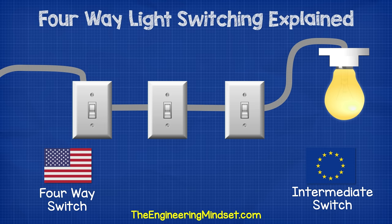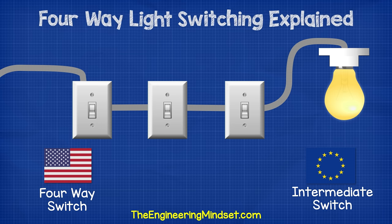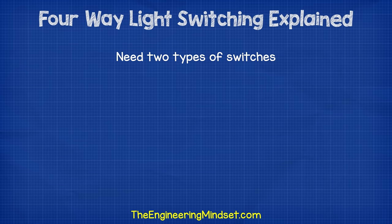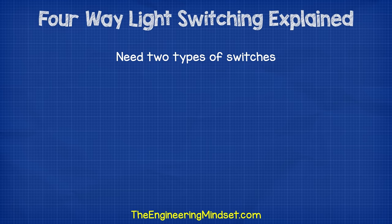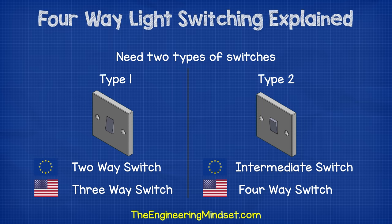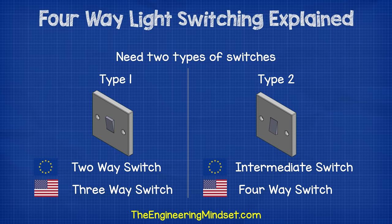This system is called by a different name depending on where in the world you live. In North America, this is called a four-way switch circuit, and in the EU and other parts of the world, this is called an intermediate switch circuit. To make this circuit work, we require two different types of switches: a two-way switch, otherwise known as a three-way switch, and we also need an intermediate switch or a four-way switch. Again, the names of these switches depend on where in the world you live.